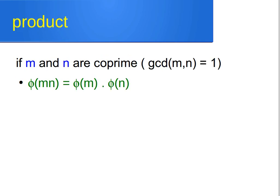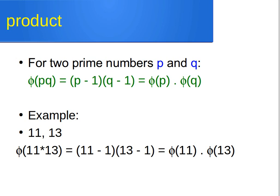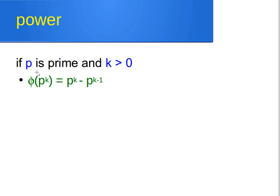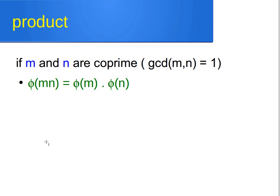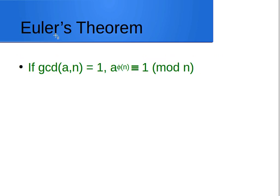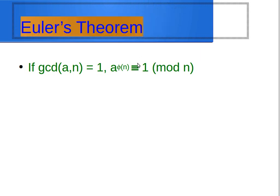Another interesting property: if m and n are co-prime — meaning GCD(m, n) = 1 — then phi(m × n) = phi(m) × phi(n). Remember these properties: phi(p^k) = p^k − p^(k−1) for prime p and positive integer k, and for two co-prime numbers, phi of their product equals the product of their individual phi values. These properties lay the foundation for Euler's theorem.